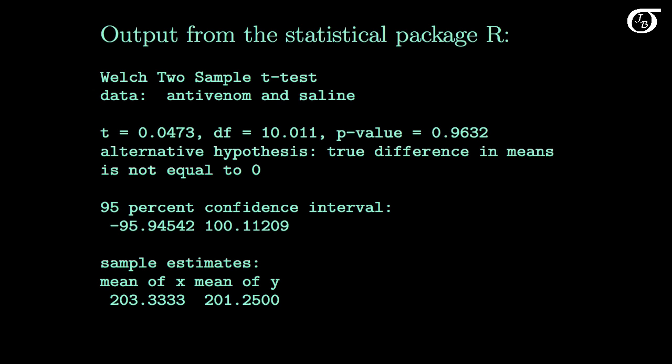In most cases we're going to let statistical software do the calculations for us. It's going to be our job to choose the appropriate method of analysis and properly interpret the results. And here's the output from the statistical software R. Output from other packages will contain similar information. And we can see here that this test statistic, the p-value, and the confidence interval are all the same as what we got, but just given to more decimal places.